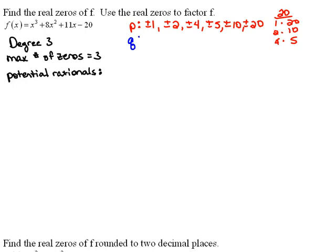Now for our q, q is all of the factors of the leading coefficient. So that's just 1. So our q would be plus or minus 1. That means my potential rationals is all of my p's over q. Well, that's just all of these over 1. So we could have 1, 2, 4, 5, 10, or 20.